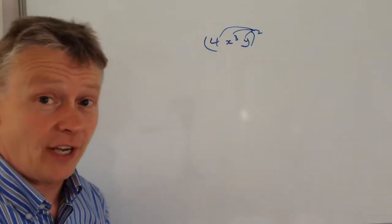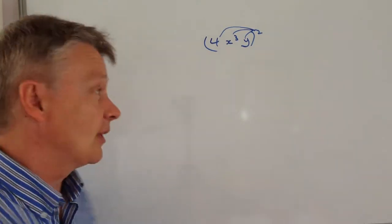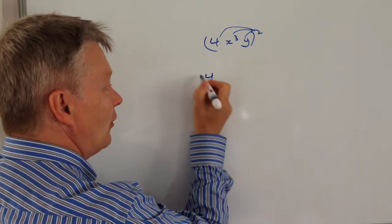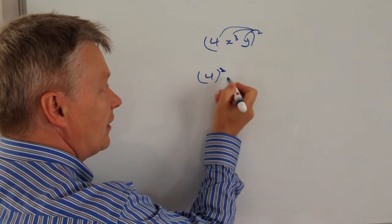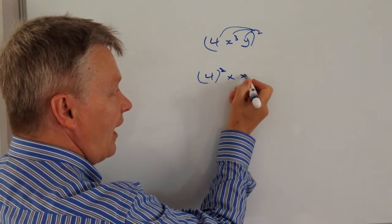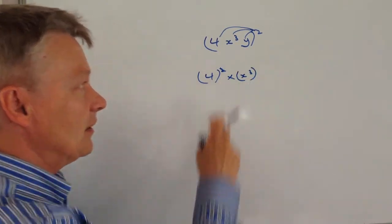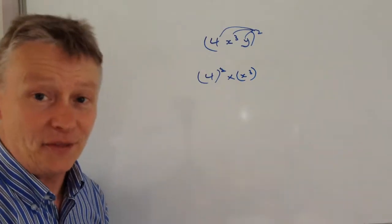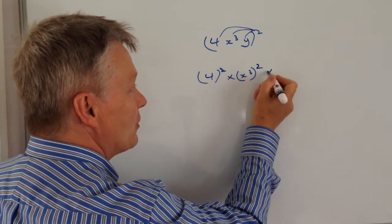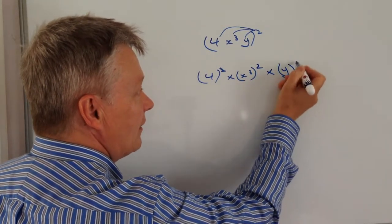So one of the ways in which you can do that is to write them all separately. So we've got 4 squared multiplied by x³, which is the middle term here. And again, that's squared, multiplied by y squared.